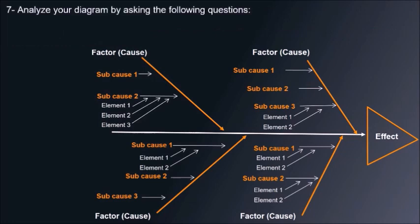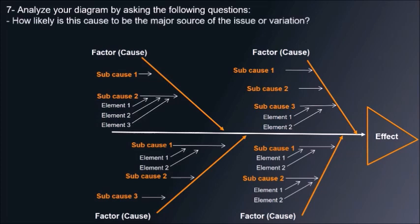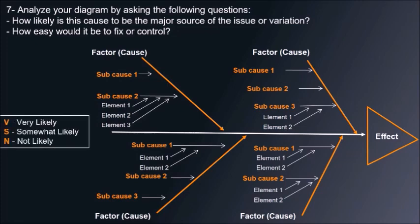Analyze your diagram by asking the following questions: How likely is this cause to be the major source of the issue or variation? How easy would it be to fix or control it? You may answer these questions with very likely, somewhat likely, or not likely.